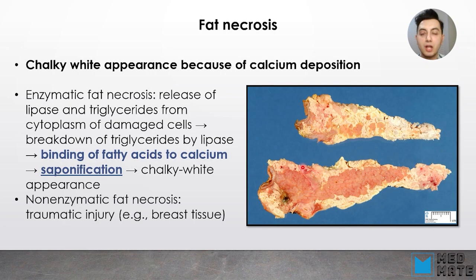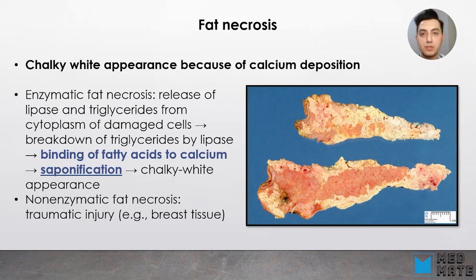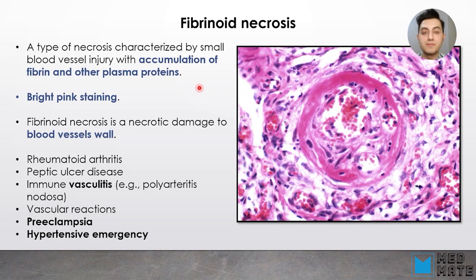Fat necrosis is another type of necrosis, presented by a chalky appearance due to calcium deposition. Enzymatic fat necrosis is due to release of lipase and triglycerides from the cytoplasm of damaged cells, leading to breakdown of triglycerides by lipase. The binding of fatty acids to calcium and saponification gives off the chalky white appearance seen in pancreatic tissue. Non-enzymatic fat necrosis can happen due to trauma — for example, in breast tissue, where trauma can cause fat necrosis.